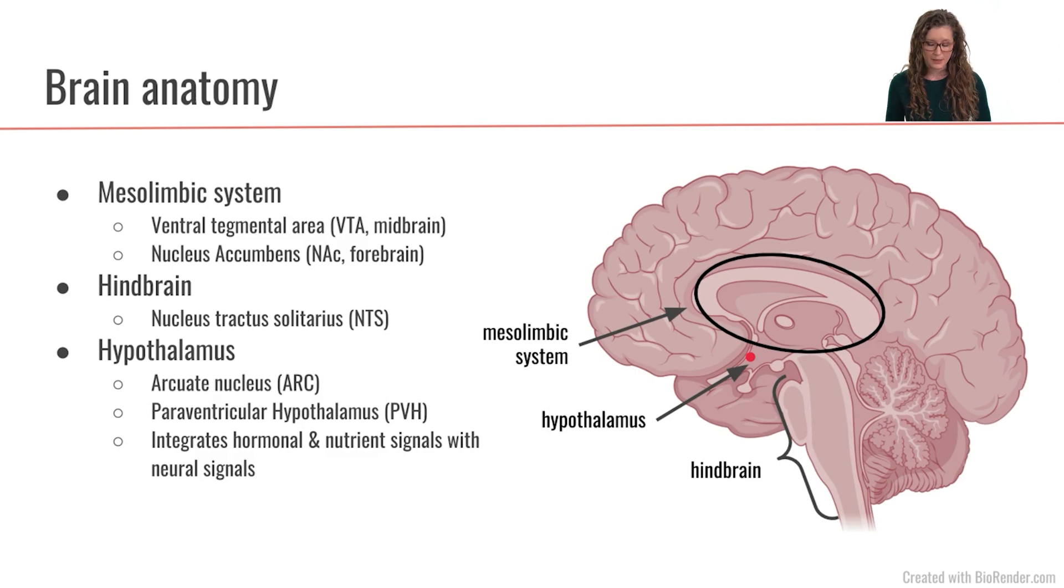We're also going to talk about the mesolimbic system. The mesolimbic system is made up of several brain nuclei that are kind of around this sort of circular region around here. The two specific areas that we're going to focus on within the mesolimbic system are going to be back here, the ventral tegmental area or VTA. And then another nucleus up here called the nucleus accumbens, which we'll abbreviate as NAC.